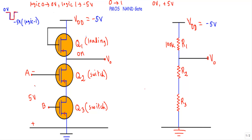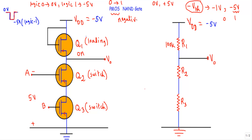Why do we apply minus five volts to indicate logic one? The threshold voltage of a P-Type MOSFET is a negative quantity. To turn on the P-Type MOSFET, we must apply a voltage more negative than the negative threshold voltage. Since the threshold is typically around minus one volt, we apply minus five volts to ensure turn-on, making it logic one. Because logic zero (0V) is greater than logic one (−5V), P-MOS logic uses negative logic.